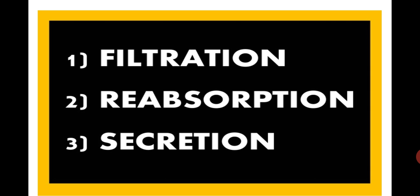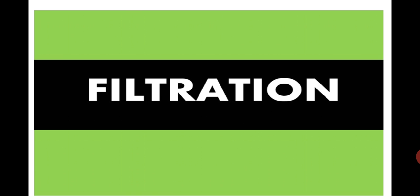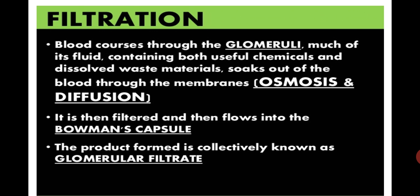The first step of urine formation is filtration. In filtration, blood courses through the glomeruli. Much of its fluid, containing both useful chemicals and dissolved materials, soaks out of the blood through the membranes by osmosis and diffusion. It is then filtered and flows into the Bowman's capsule.